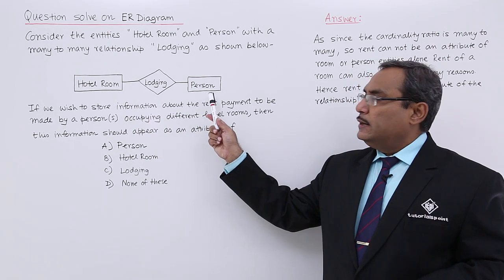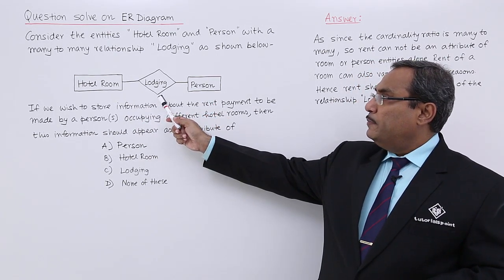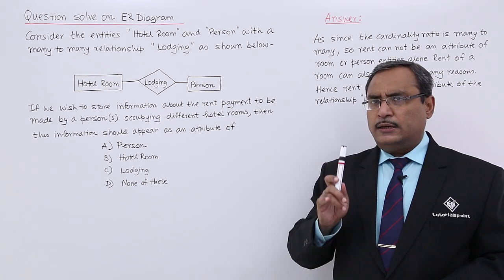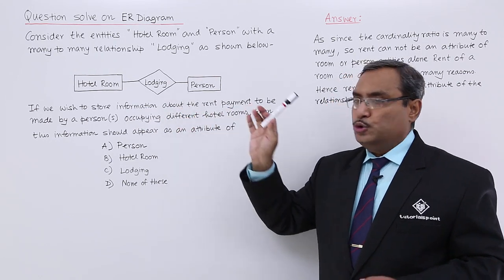So entity hotel room, entity person, and they are connected with the relationship many to many that is lodging. As the cardinality ratio is many to many, no arrow should be put there.